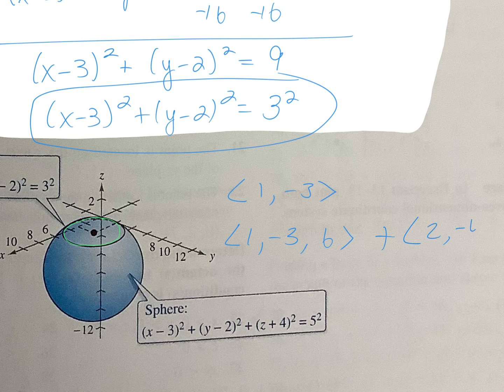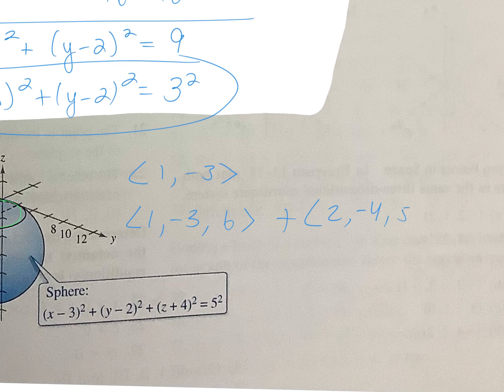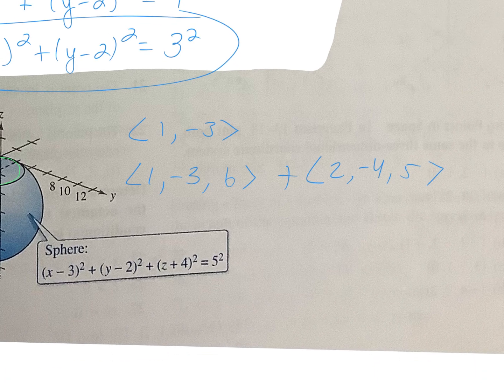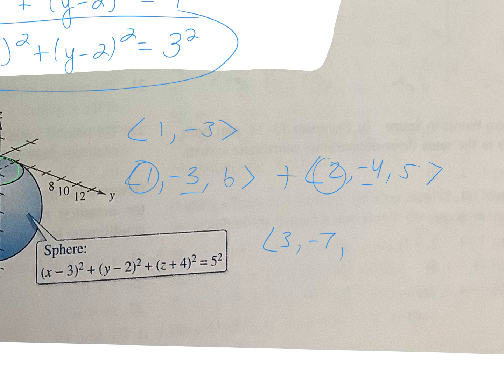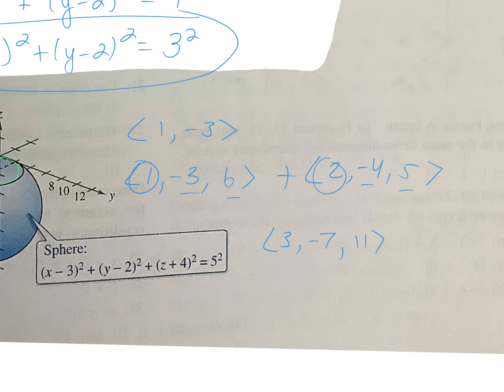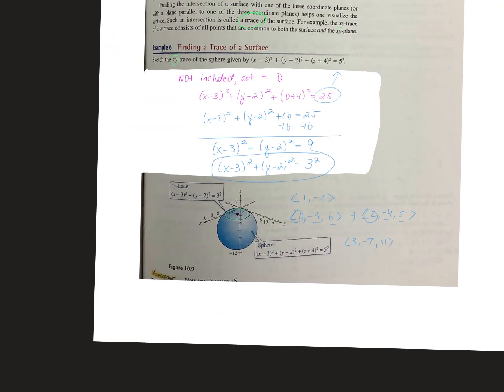And if you're adding it to another one, 2, negative 4, and 5. If you were adding these, what would you add together? 1 and 2, which would give you 3. Negative 3 and negative 4 would give you negative 7, and then 6 and 5 would give you 11. Easy, right? That is it. You guys have a web assign. Get working on it. You can work together. That's fine. But get this done. Get it done and submitted, please. And then we'll start on 10.2 tomorrow.